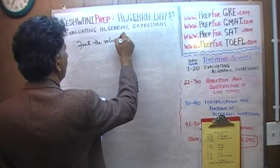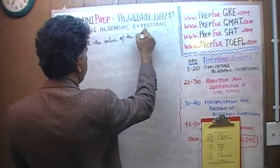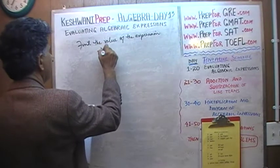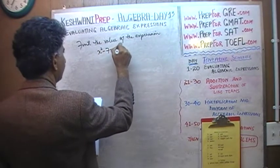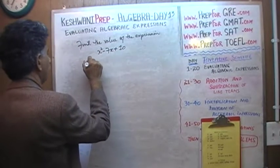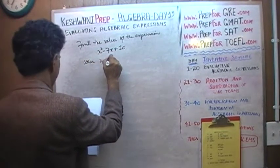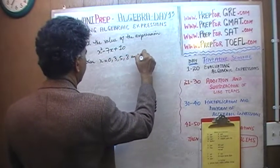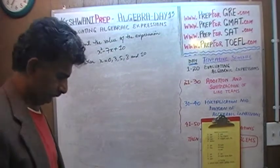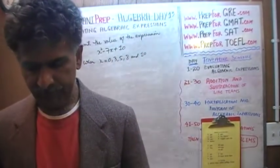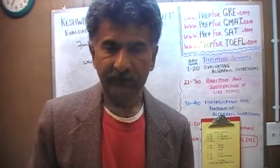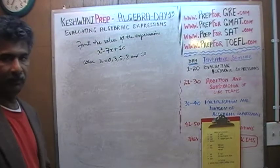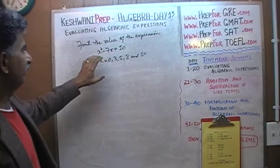The expression is x squared minus 7x plus 10, and we need to find its value when x equals 0, 3, 5, 8, and 10. That's our job — to find the value of this expression at these five values of x.